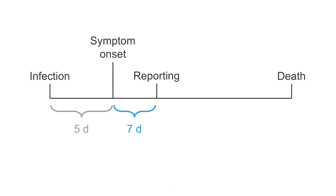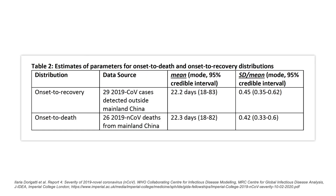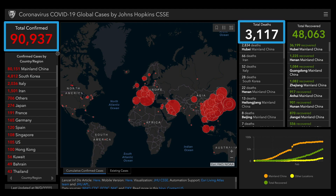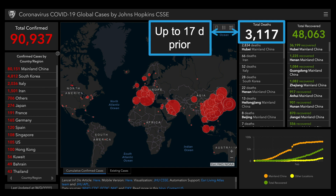So let's say the symptom-onset-to-reporting period is 7 days. The time from symptom onset to eventual death, in an analysis done at Imperial College London, was found to be 22.3 days — very similar to the time of recovery. So 22 minus 7 days equals a time delay between reporting and death of 17 days. That's the interval one should use: instead of comparing the current total deaths to the current total confirmed cases, one should compare the current total deaths to the total confirmed cases from 17 days prior.